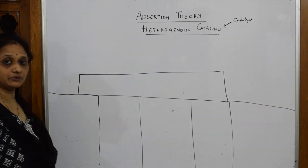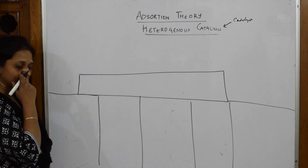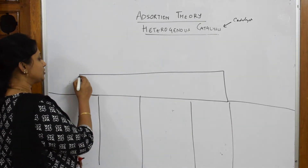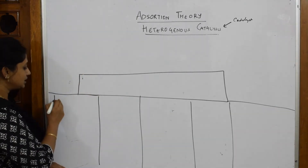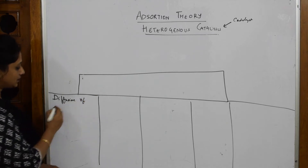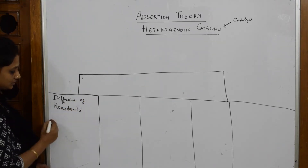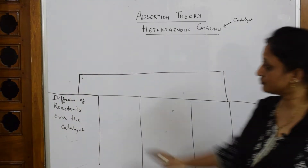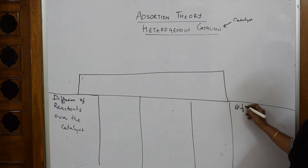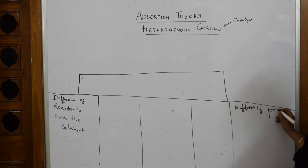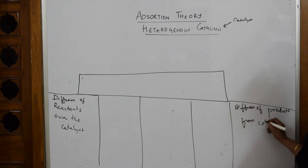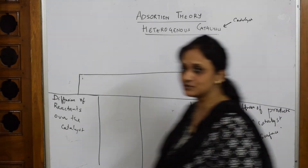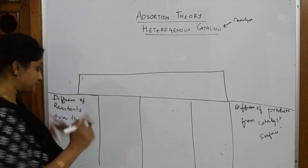According to adsorption theory, the first important step is diffusion — diffusion of reactants over the catalyst. And the last step would again be diffusion — diffusion of products from the catalyst surface. So reactants come in through diffusion, and products leave through diffusion.